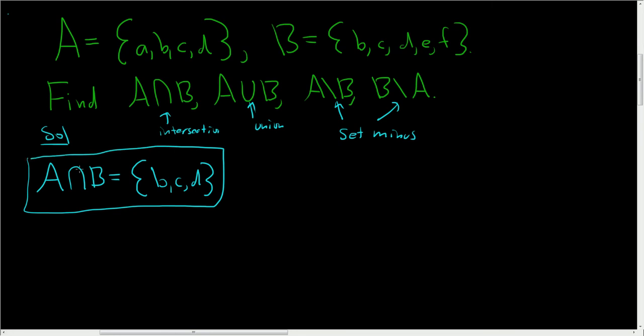All right, so it's the only things they have in common, right? So you see little a is in capital A, but it's not in B, so we don't include that. Likewise, little e and little f are in capital B, but they're not in A. So it's just what they actually have in common. So it looks like B, C, and D work.